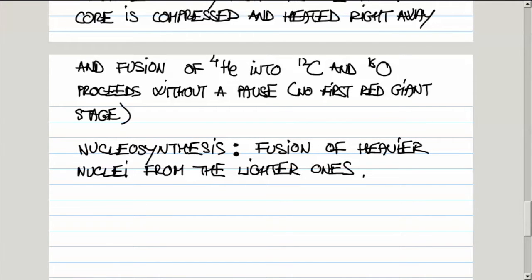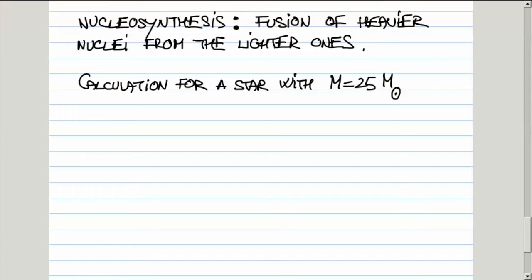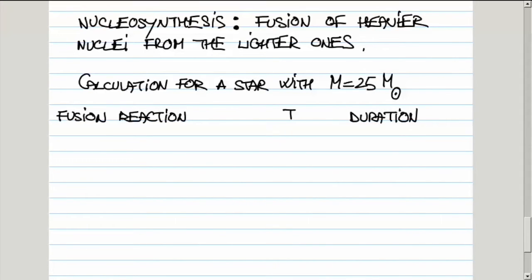The calculation for a star of 25 solar masses gives the following. I'll make a little table with the fusion reaction, temperature, and duration. First, the main sequence stage: hydrogen is fusing into helium. In this massive star, the temperature is 70 million degrees Kelvin, and the duration is 10 million years.